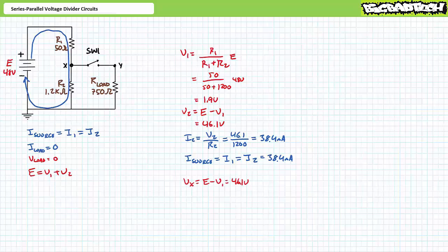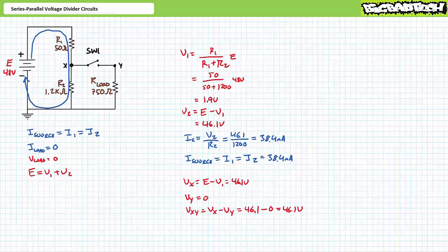Nodal voltage Vx is equal to the rise E minus the drop V1. Substituting our given values demonstrates Vx with respect to ground is 46.1 volts. Given switch one is in the open state, node Y is also at ground and as a result node Y exhibits a zero volt differential with respect to ground. This means Vxy, the voltage across the switch, is 46.1 volts.